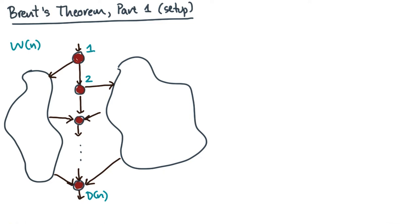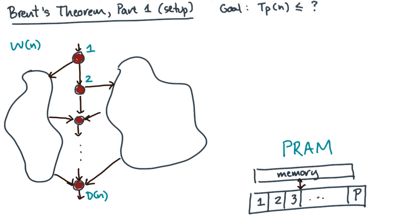We have a DAG with a certain amount of work and a particular span. Just as a reminder, our goal is to estimate an upper bound on its execution time. Suppose I give you a PRAM with P processors, and let's say you run the DAG.